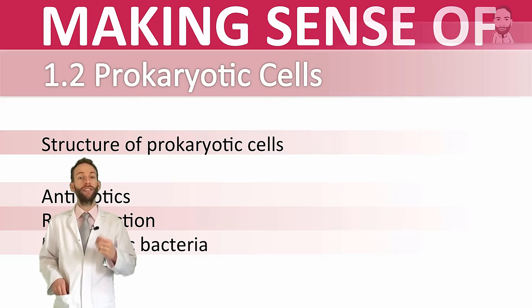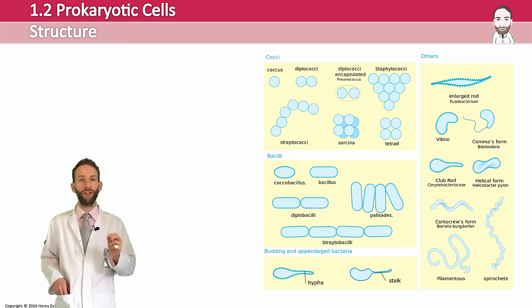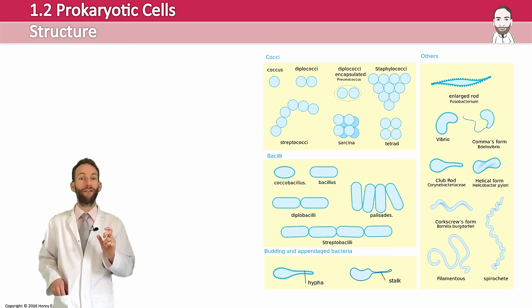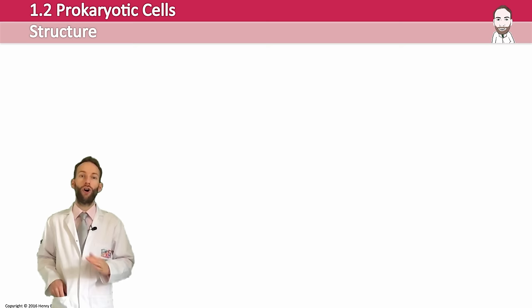Prokaryotic cells actually come in lots of different shapes and sizes, but the two main types are ones called cocci, which means round, or bacilli, which means rod-shaped. This word usually forms part of their binomial name. For example, Lactobacillus are rod-shaped ones, or Staphylococcus are round-shaped ones.